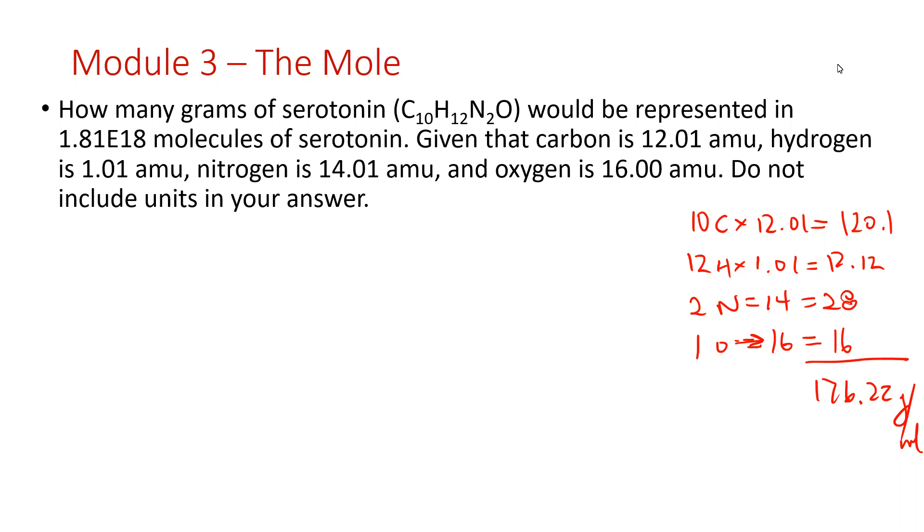So step one, find the molar mass. We've got 10 carbons times 12, added all those together, same thing for hydrogen, nitrogen, and oxygen to get approximately 176.22 grams per mole for our molar mass.